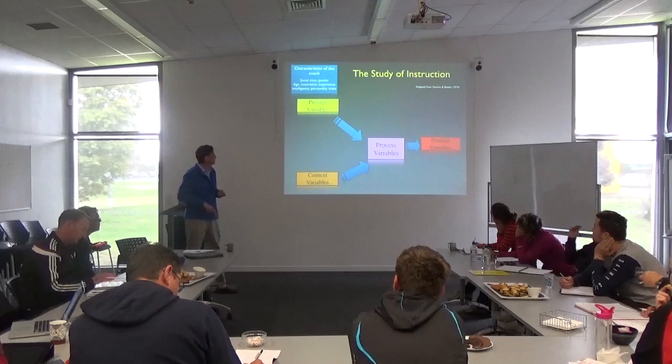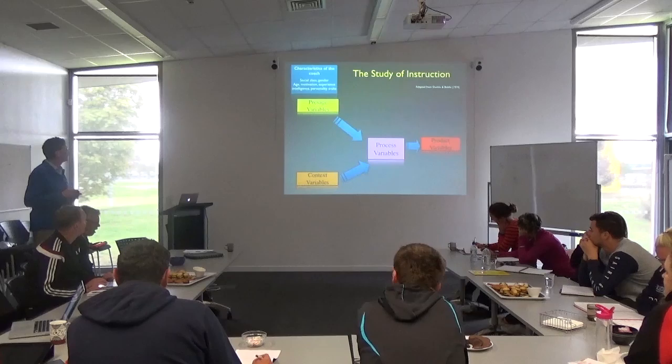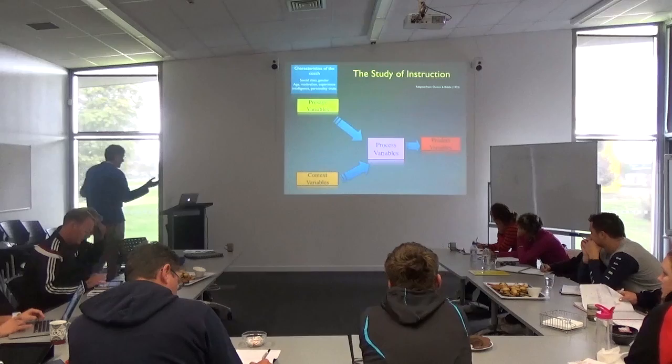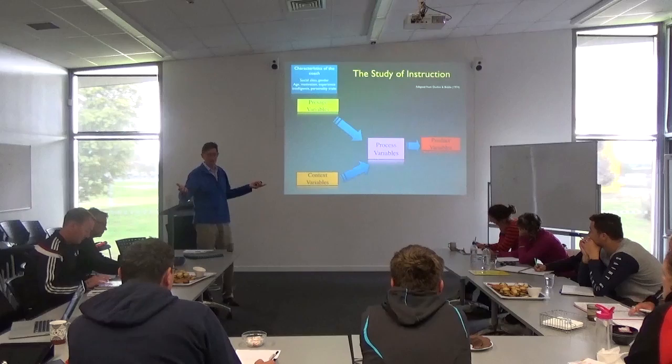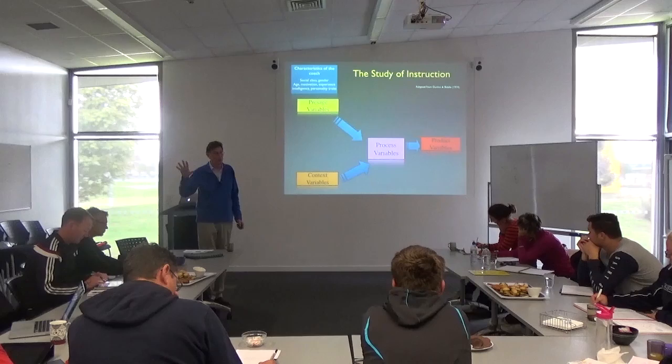These are some of the demographic or generic things that align with what we refer to as presage variables. Social class, age, gender — these are almost objective measures. Age is very objective — you're a number and that's it. Experience — most people could objectify that: 'I've been doing this for nine years.' But then it gets really interesting and quite messy because we start to go into the subjective side.